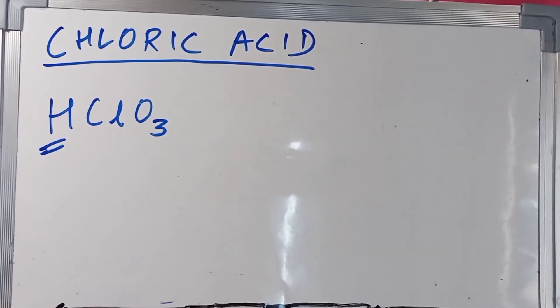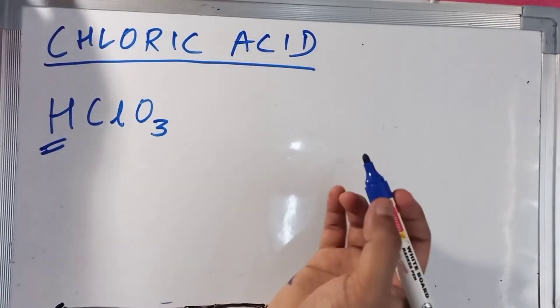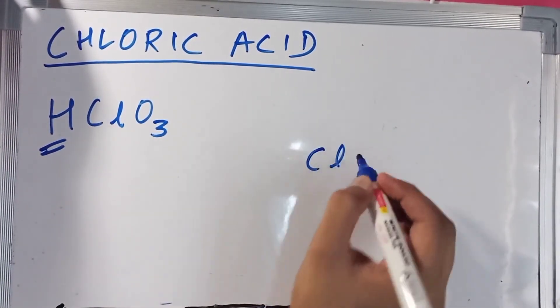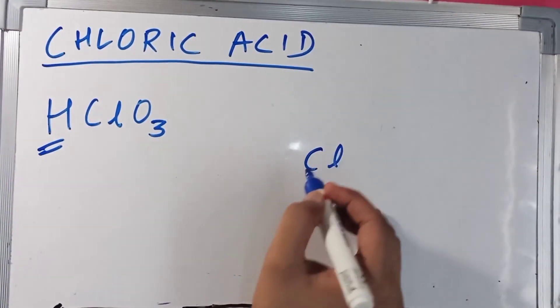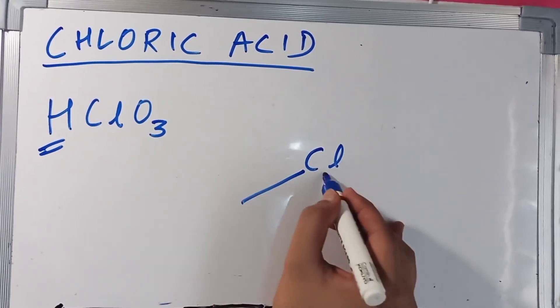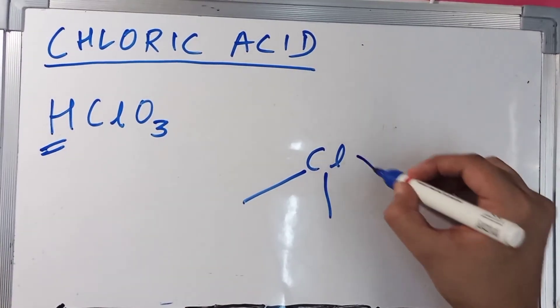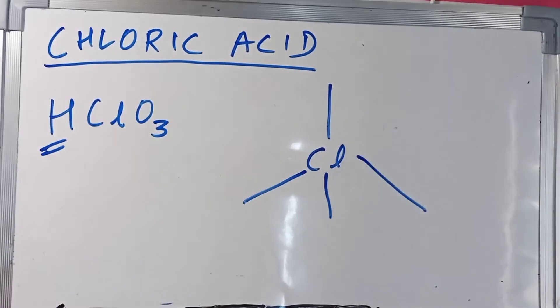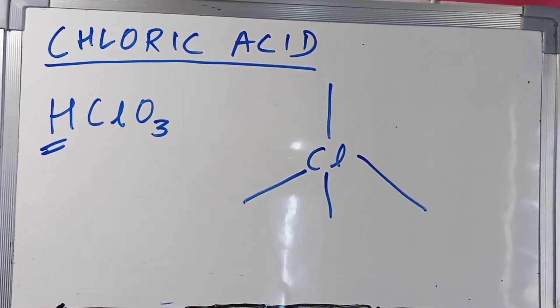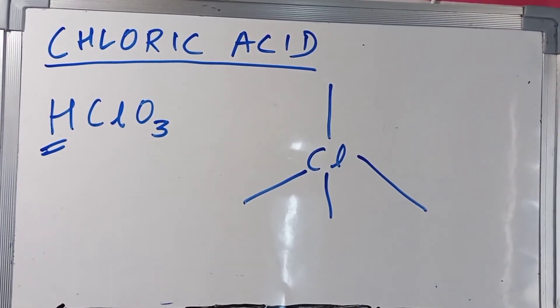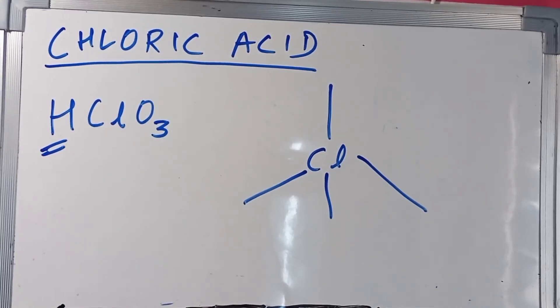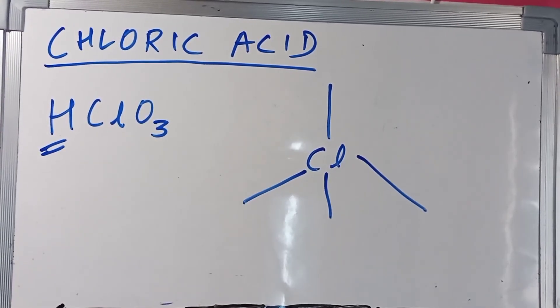Now, we are going to draw the actual diagram of chloric acid. And in tetragonal, you know, all the bonds are having 109 degrees and 27, 28 minutes. They make 109 degrees and 28 minutes with each other.